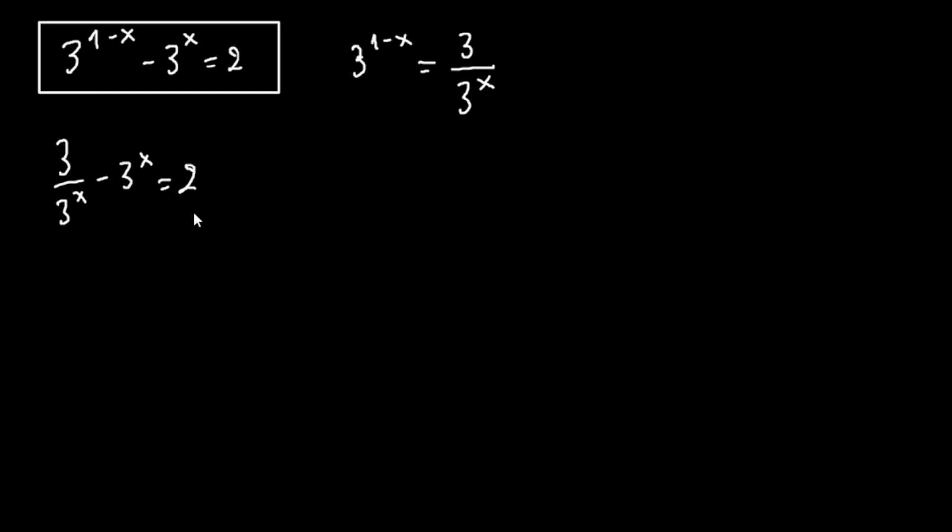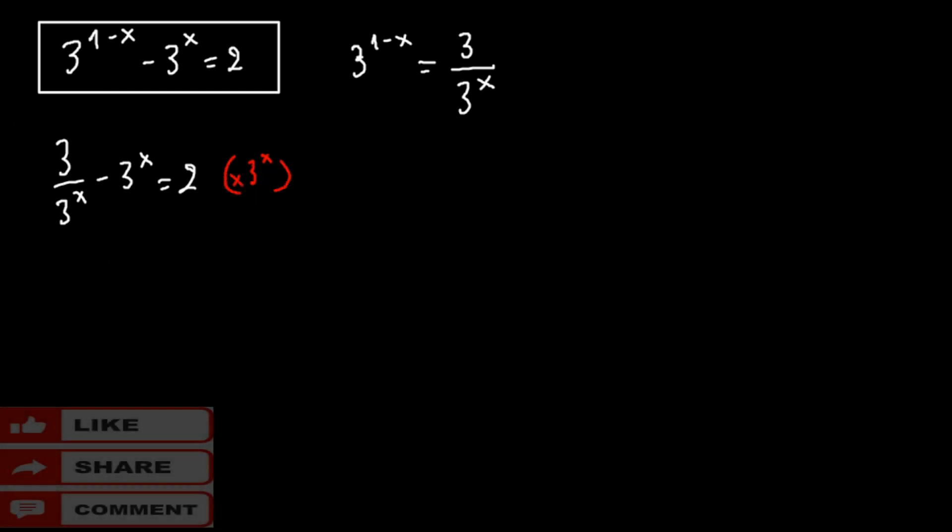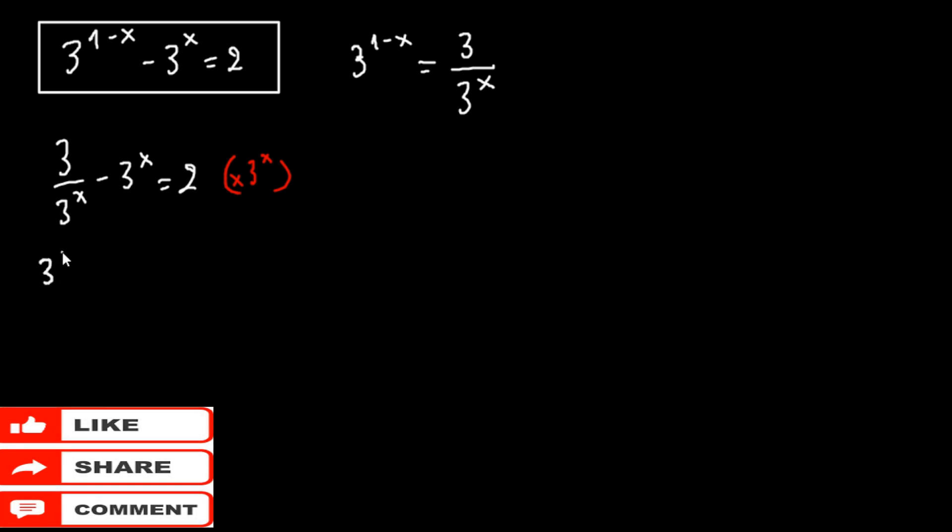Now we multiply both sides with 3 to the x, so this becomes 3 to the x times 3 over 3 to the x minus 3 to the x times 3 to the x equals 2 times 3 to the x. So this and this cancels, and this becomes 3 to the x squared.